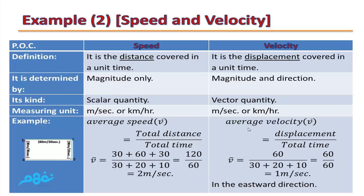Now, what about calculating the average velocity? For average velocity, the formula uses displacement over total time instead of distance. To find displacement, we identify the starting point A and the ending point D. The straight-line distance between them is AD, which equals 60 meters, because the shape is a rectangle. So displacement equals 60 meters in the direction of AD. Average velocity = 60 ÷ 60 = 1 meter per second, in the eastward direction (direction of AD).